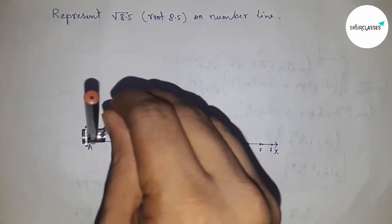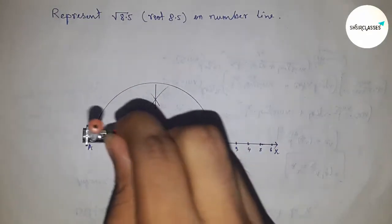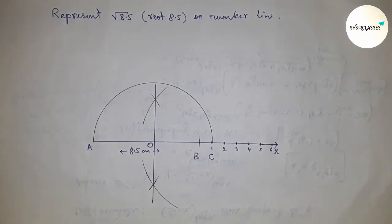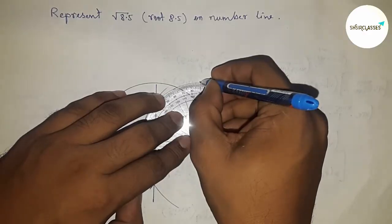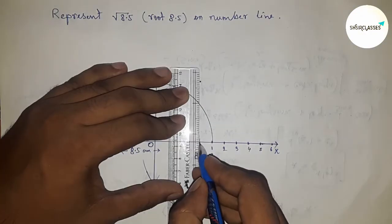Draw a semicircle. Next, draw a 90-degree angle on point B.